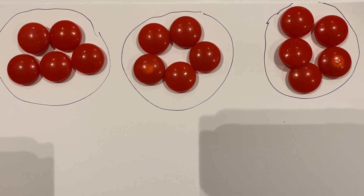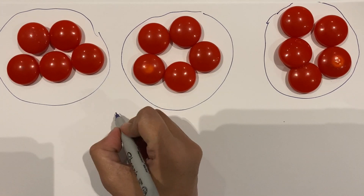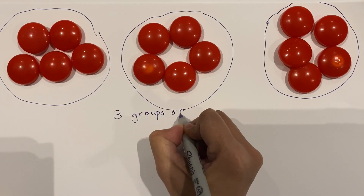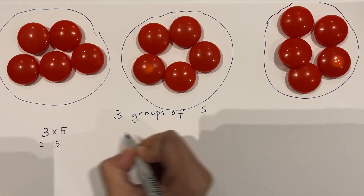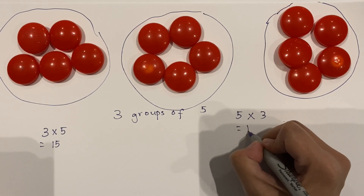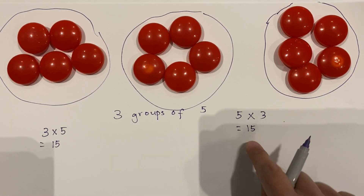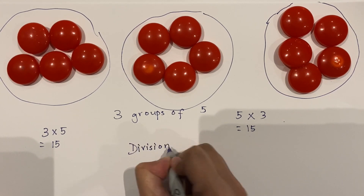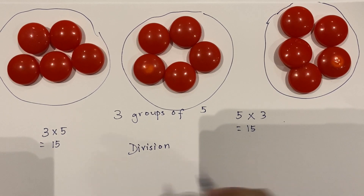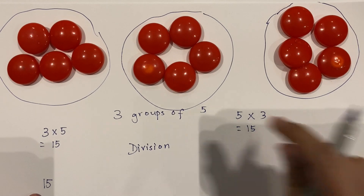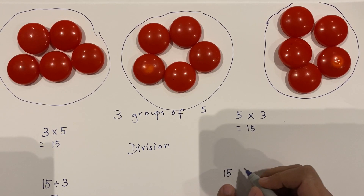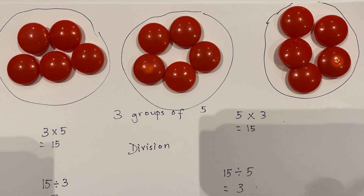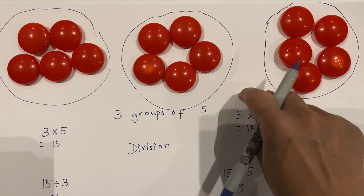Another example using butter magnets. I have three groups of five magnets in each group, so three times five equals 15. Another way of writing is five times three equals 15 — that's five groups of three. For division, always start with the total, which is 15. So 15 divided by three gives five in each group, and 15 divided by five equals three groups.